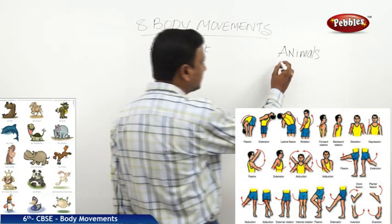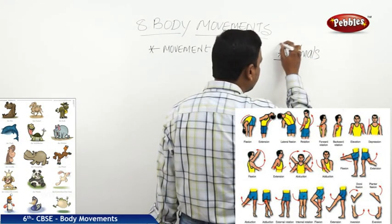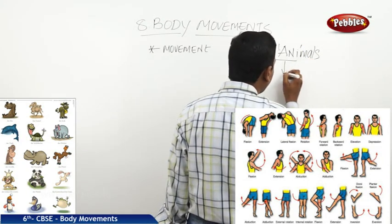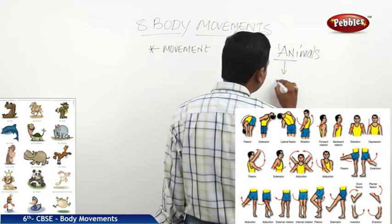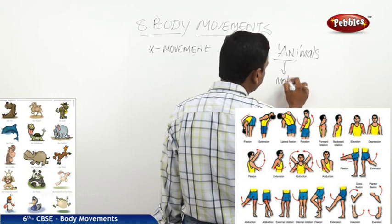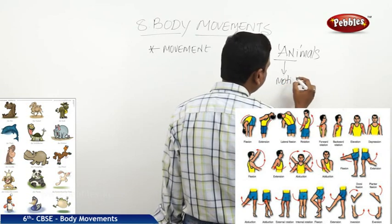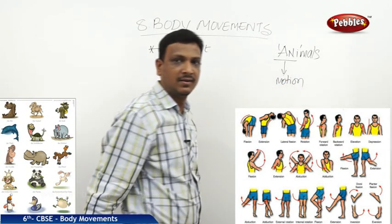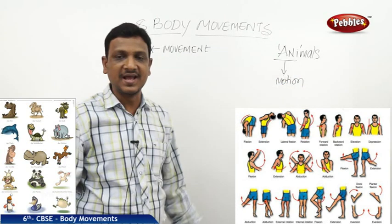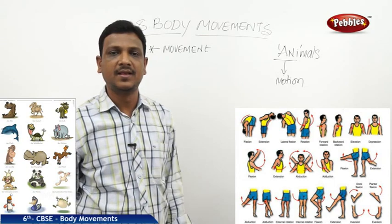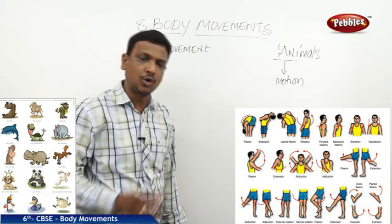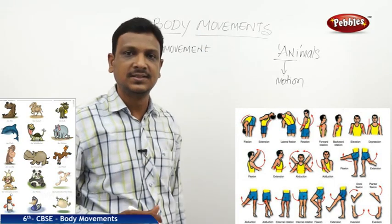The term 'Annie' from animals means motion, movement, life. So movement is observed in living things at all levels.